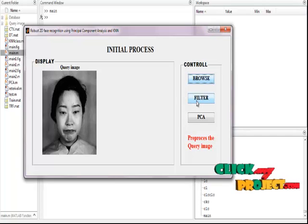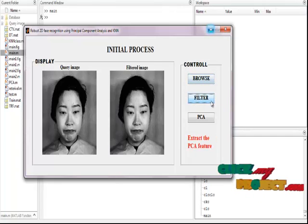Next, we click the filter button. After clicking the filter button, the noise is removed from the input image because this improves the quality of the input images by removing unwanted pixels in the input image.